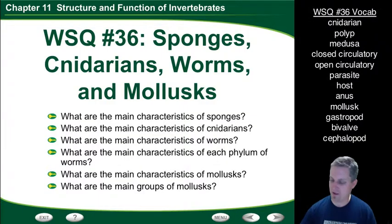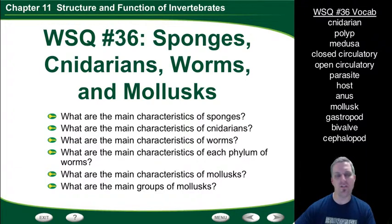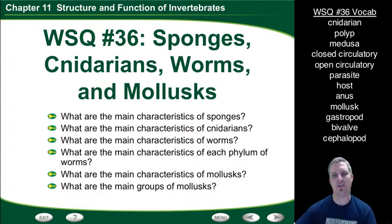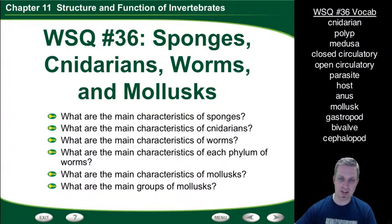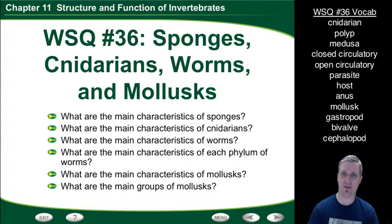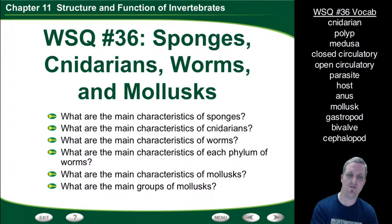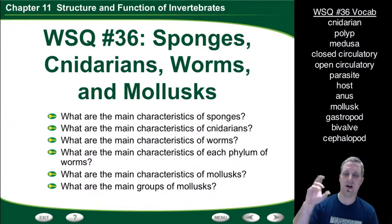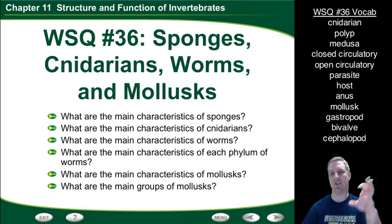Welcome to WSQ 36. Today we are going to start going from our introduction on animals and talk about the different invertebrate phyla. We're going to talk about basically four different groups: sponges, cnidarians, worms, and mollusks. We'll cover the main characteristics of each group and the specific phyla of worms, as well as the main groups of mollusks.